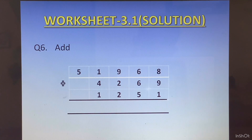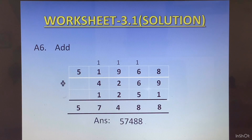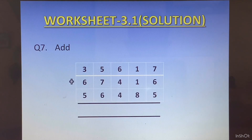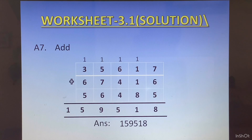Question 6: 51968 plus 4269 plus 1251 and the answer is 57488. Question 7: 35617 plus 67416 plus 56485 and the answer is 159518.